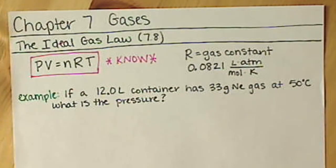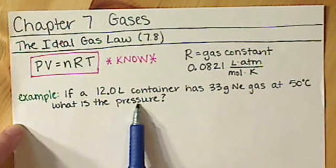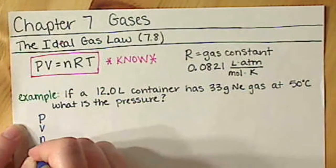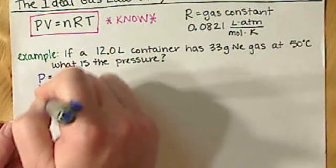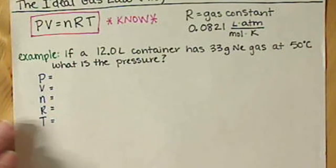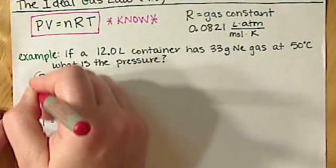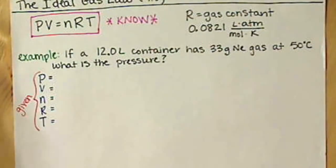If a 12-liter container has 33 grams of neon gas at 50 degrees Celsius, what is the pressure? Usually any time that I know I'm working with gases, I just find it's easy to list all of my values of Puvnert down the side of my paper. And then while I'm working or reading through the problem, I can kind of fill in what I've been given.